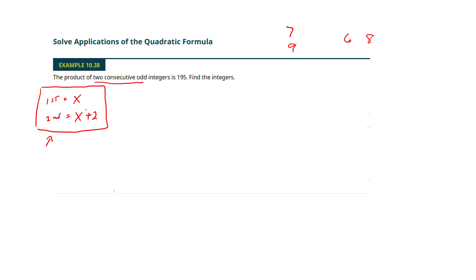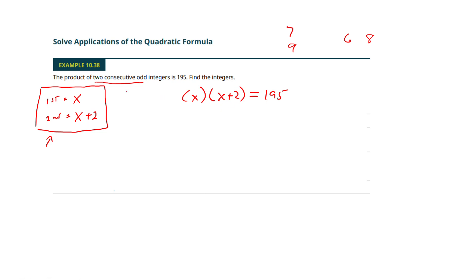They're telling us that we want the product of these two things, so we're going to multiply the two of them, and that is 195. We've got an equation set up now — we've taken English and turned it into math language.